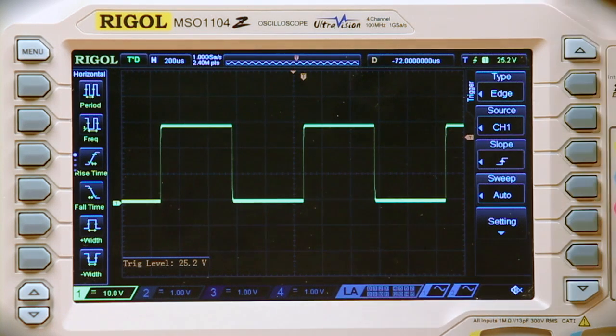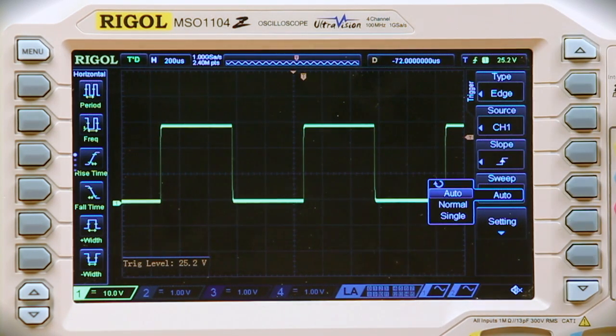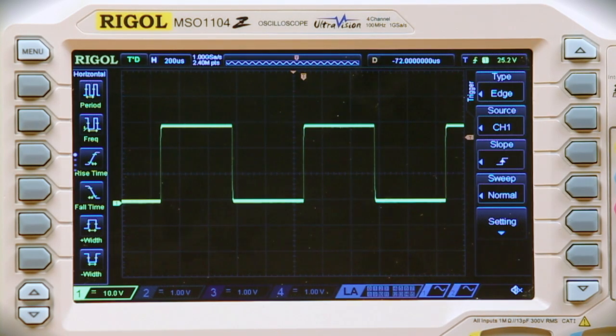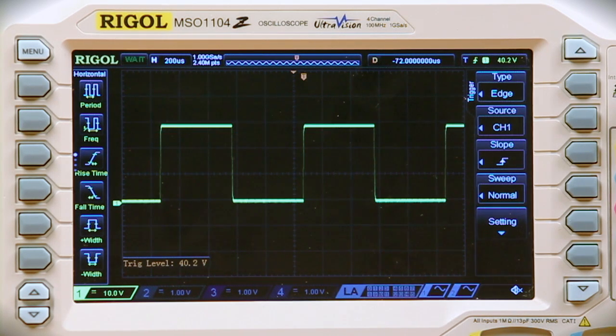And if I bring the threshold down, I'm going to switch it over to normal. And then once it's on normal, I'm going to do the same thing, move the threshold off. And as you can see, unlike auto, where it's forcing a trigger, normal is just going to keep the waveform there until it sees another trigger event.